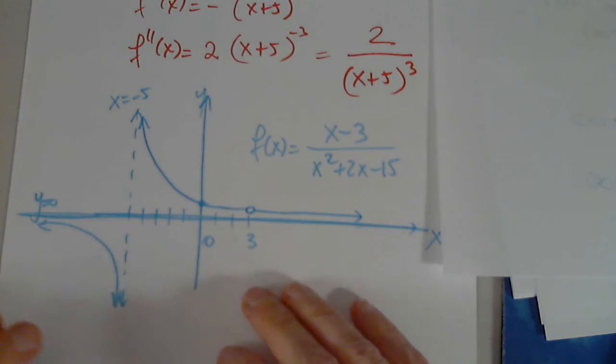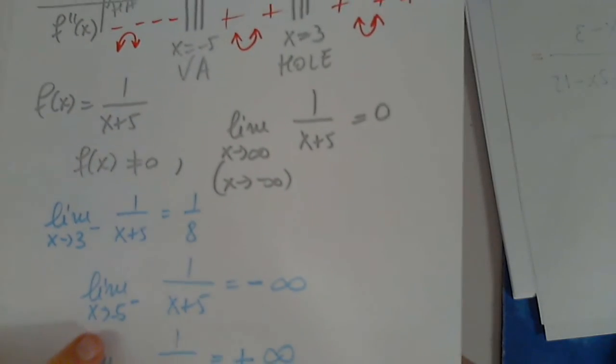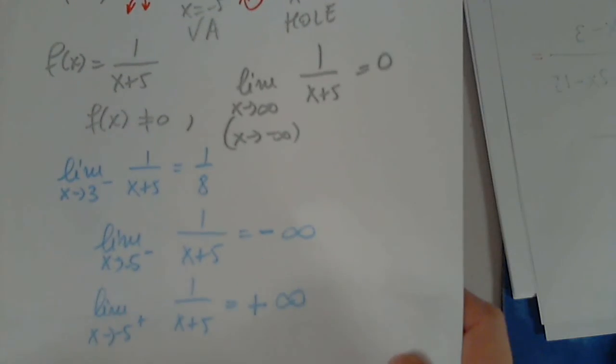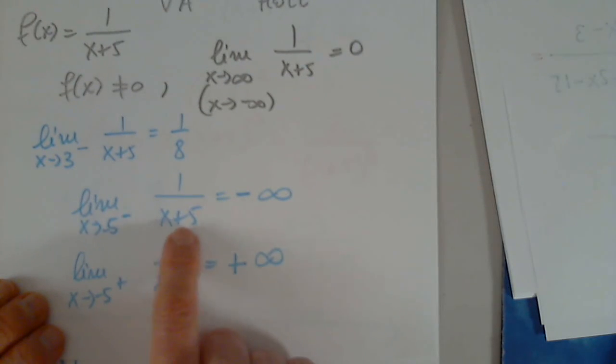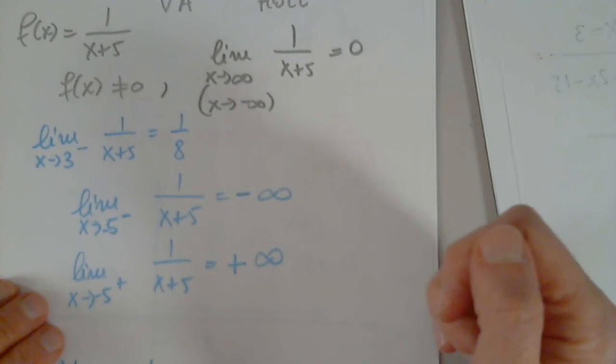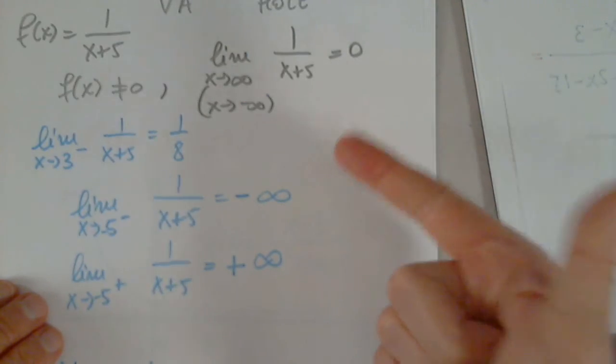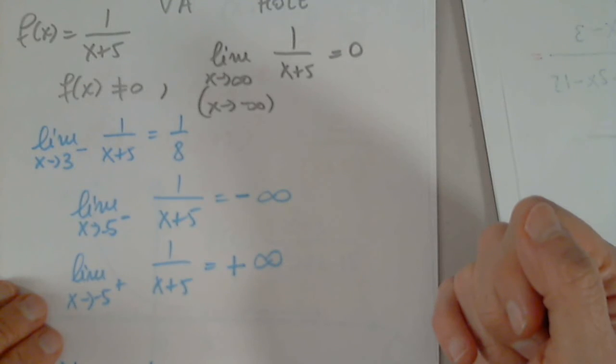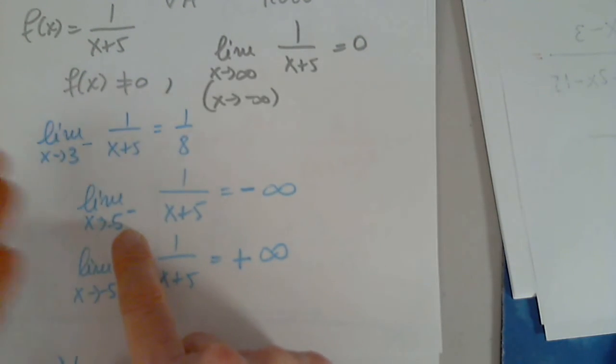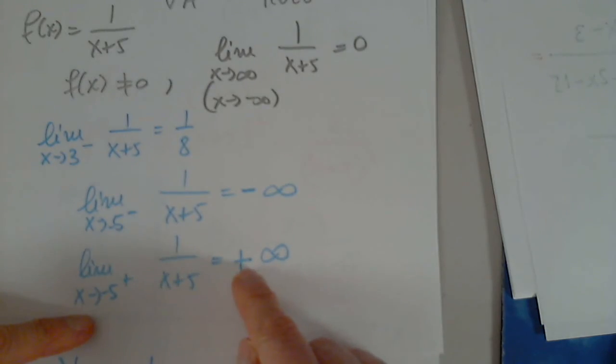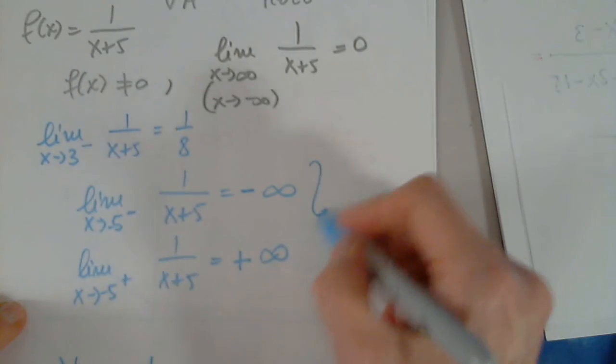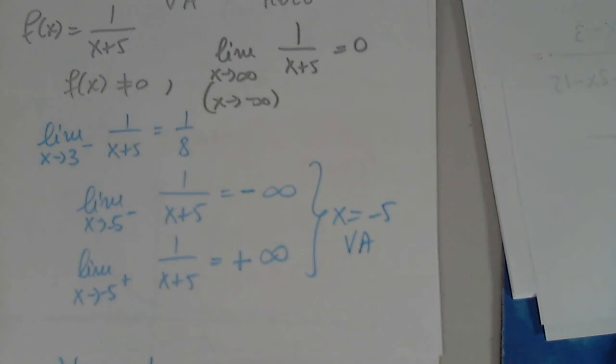I have a question how you got the limit as x approaches 5. Not 5, negative 5. Oh, negative 5. When you plug in negative 5 in the denominator, you get 0. So it's 1 over 0. 1 over 0 is always DNE, positive infinity, or negative infinity. So negative 5 from the left is negative 5.1. Negative 5 from the right is negative 4.9. So that's why we have here x equals negative 5, a vertical asymptote. Is that okay?